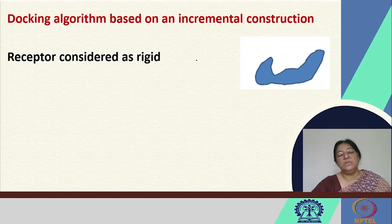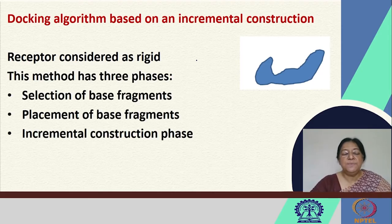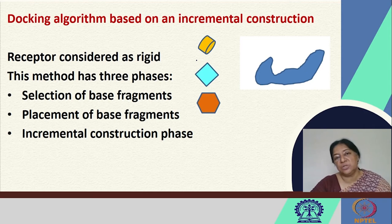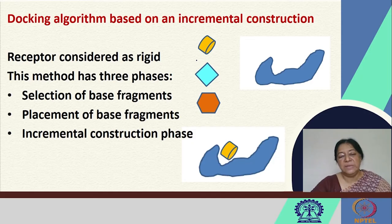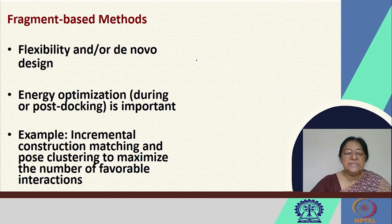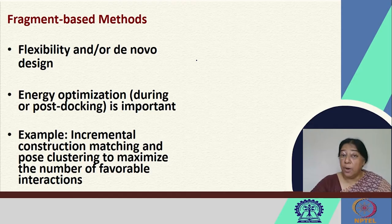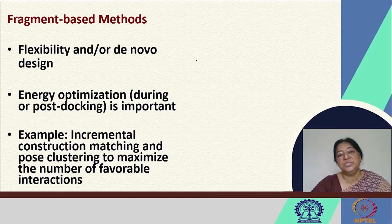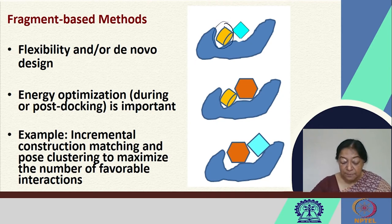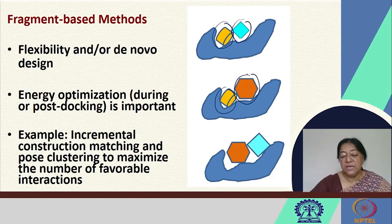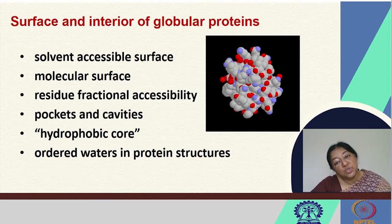The incremental construction docking algorithm considers a rigid receptor and has three phases: selection of base fragments, placement of these fragments, and incremental construction. In fragment-based methods, flexibility is incorporated through de novo design with energy optimization, and incremental matching can give a better fit compared to docking the whole ligand molecule together. Fragments are placed one by one and scored to determine the best fit.